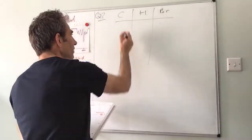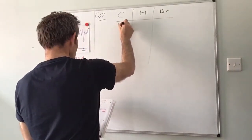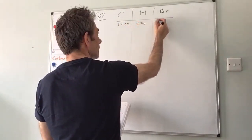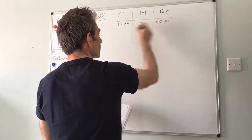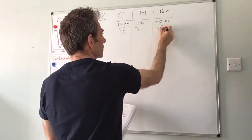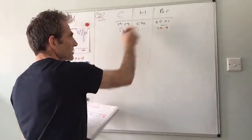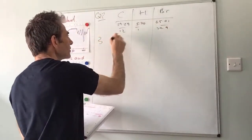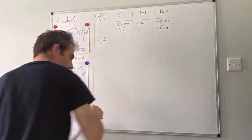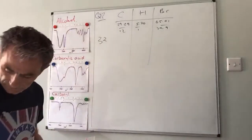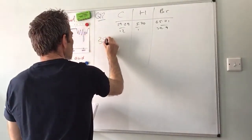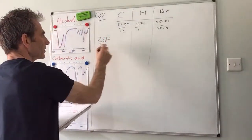So question two, first of all as soon as you see percentage composition values you need to work out the empirical formula. So very quickly, 29.2, 5.70, these are the values in the question, 65.01, divide by the MR - 12, 1, 79.9. The moles value that you get now in this line must be three significant figures. If you don't give the three significant figure values you will lose a mark.